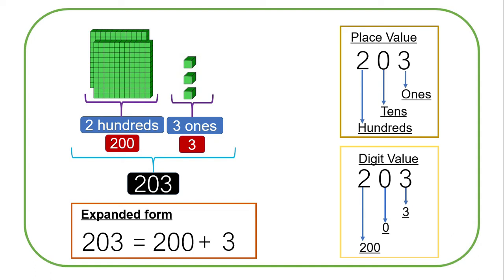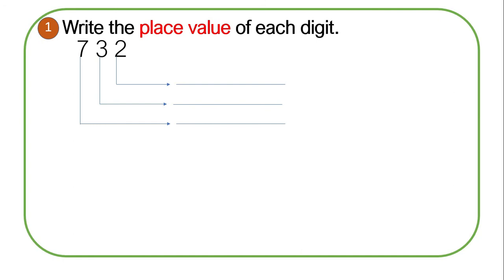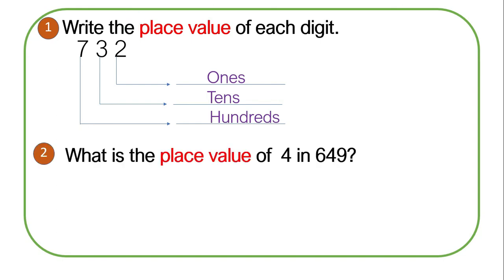From what we have learned, let us try to answer these questions. You can pause the video and think about the place value of each digit in the number seven hundred and thirty-two. The place value of two is ones, the place value of three is tens, and the place value of seven is hundreds. In question two, we need to know the place value of four in the number six hundred and forty-nine. The place value of four is tens.